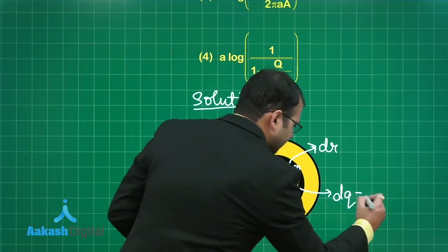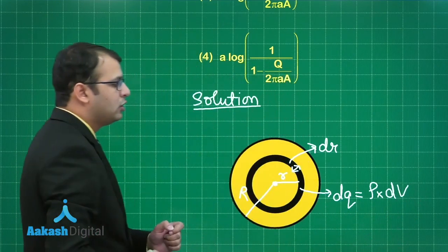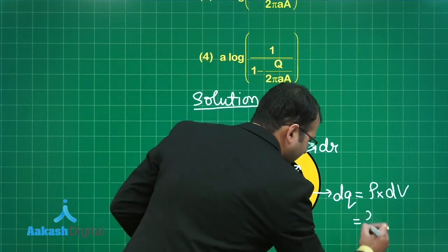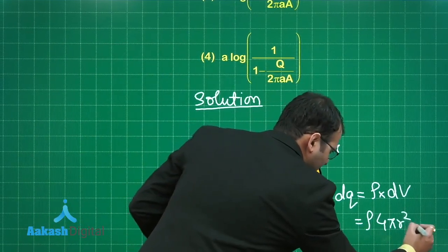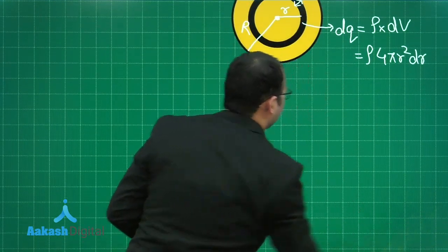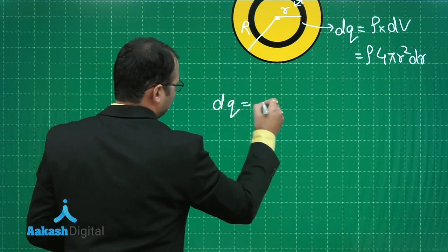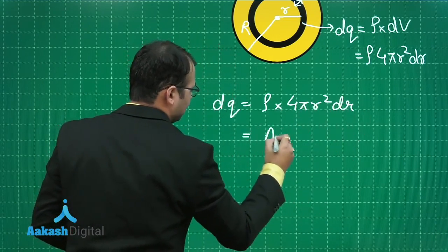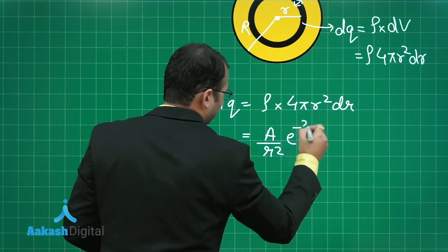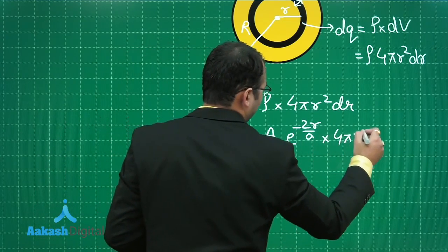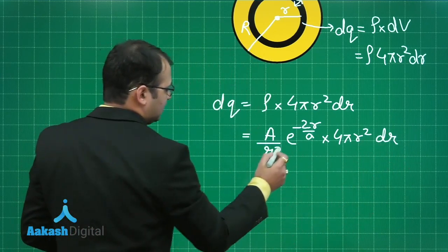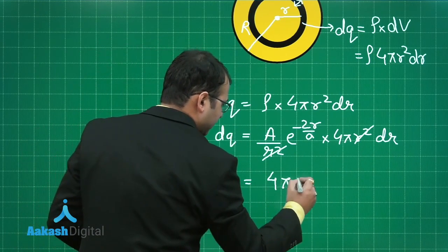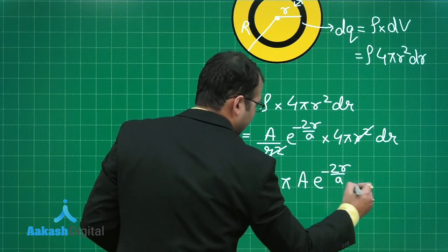The small charge element dq equals charge density rho times the small volume of the shell, which is 4πr² dr. Substituting rho = A/r² × e^(−2r/a), we get dq = (A/r²) × e^(−2r/a) × 4πr² dr. The r² terms cancel, leaving dq = 4πA × e^(−2r/a) dr.